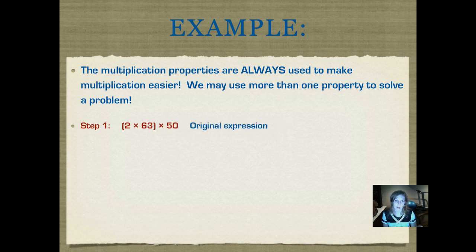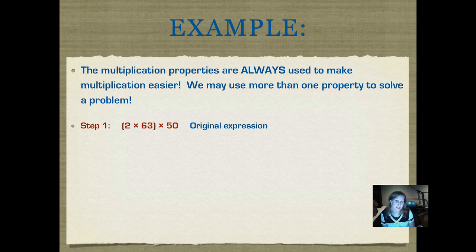Here's the original expression: 2 times 63 times 50, and we have the parentheses around 2 times 63 to show that we would multiply those together first. Here's the problem though — I might be able to multiply 2 times 63 together in my head, but then taking that product and multiplying it by 50 is not easy for me. I wonder if I can use some of the properties to make that easier. Do you see any numbers in that expression that would be easier for you to multiply using mental math?